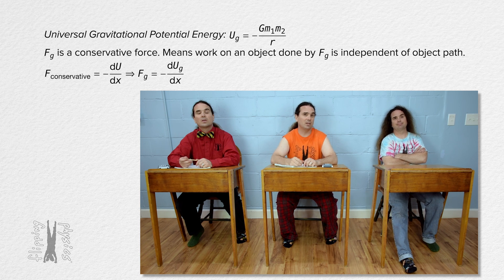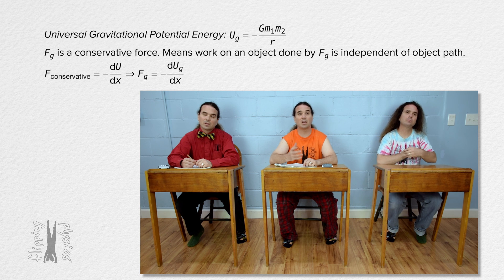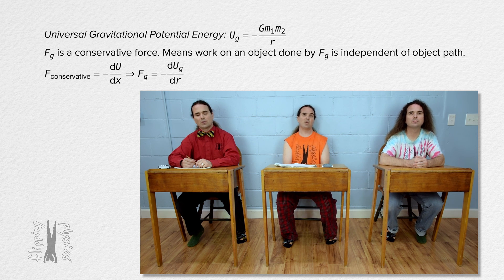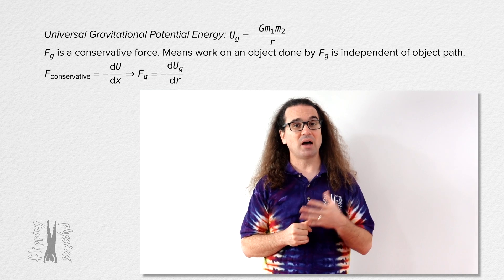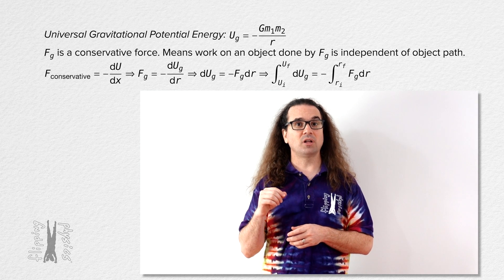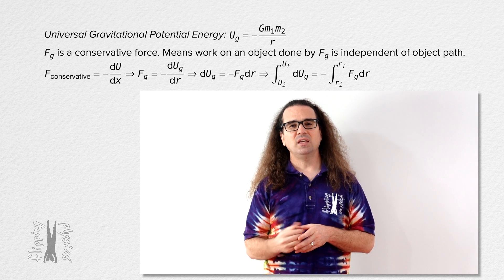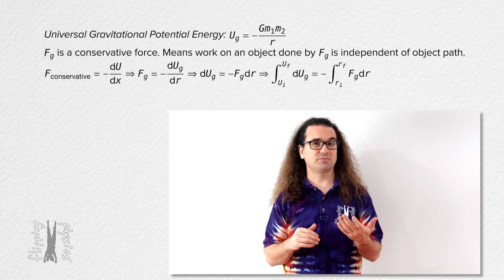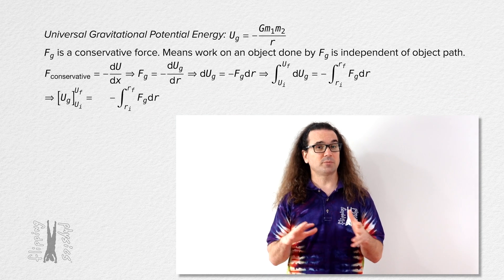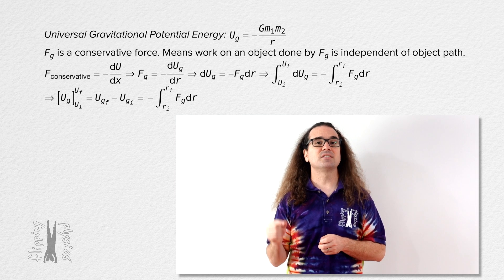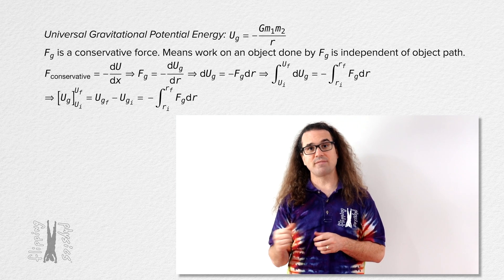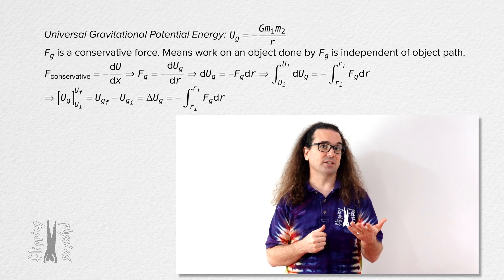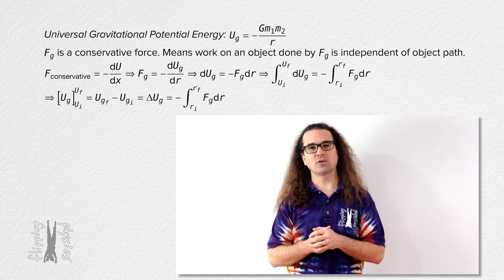Then the force of gravity equals the negative of the derivative of gravitational potential energy with respect to position. However, the position symbol should be r because the force of gravity always acts along the radius towards the other object. Now we can multiply both sides by dr and take the definite integral of both sides. The integral with respect to gravitational potential energy is just gravitational potential energy. We can substitute in the limits, and final gravitational potential energy minus initial gravitational potential energy equals the change in gravitational potential energy. That is the left hand side of the equation.